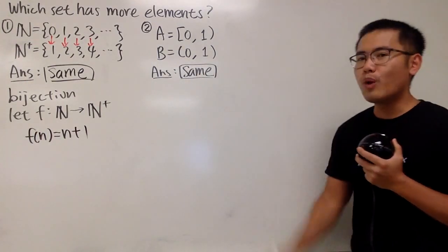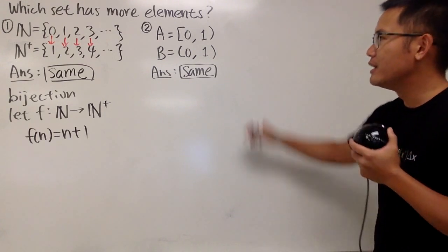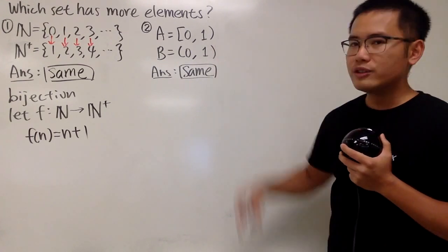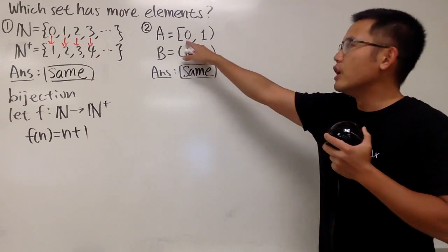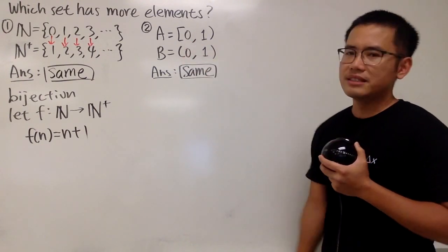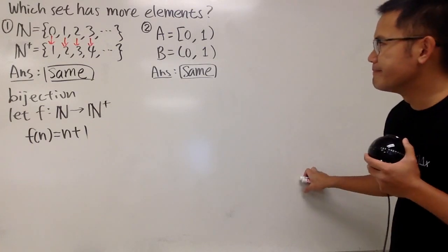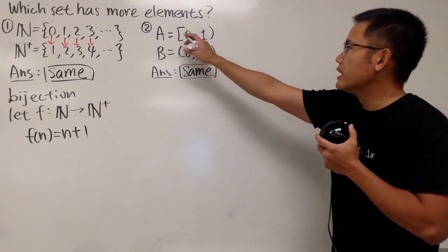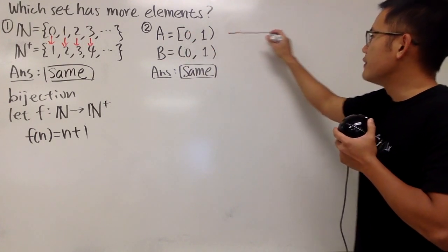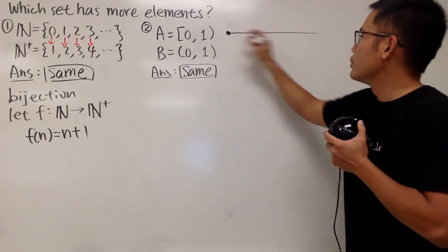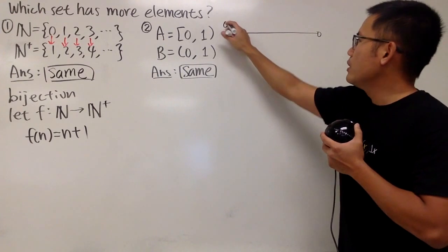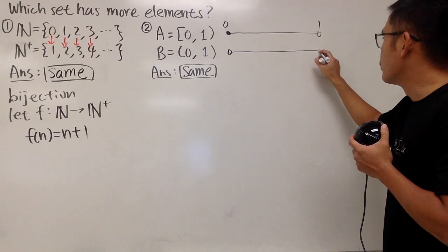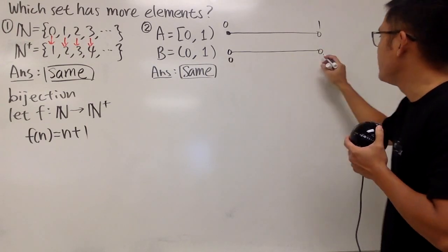However, for the second one, it's trickier because these two sets, they are sets of real numbers, and unfortunately, they are not countable. And it does seem like we have an extra zero here, and this one does not. Well, I think a picture will help, so let's go ahead and draw a picture, because set A, this right here is just an interval going from zero to one, including zero, not including one. And for set B, we do not include zero, and we do not include one. So this is the picture for set B.